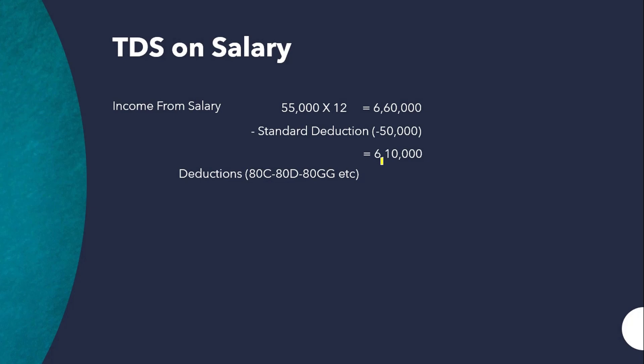Deductions under Chapter 6A of the Income Tax Act allow expenses and investments to reduce the taxable income. For example, investments in PPF, medical expenditure, or rent payments allowed under Chapter 6A. Let's say the total deductions are ₹1 lakh, so ₹6,10,000 minus ₹1,00,000 gives a net taxable income of ₹5,10,000.